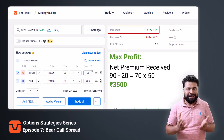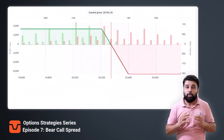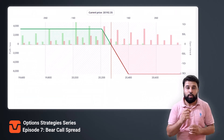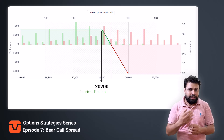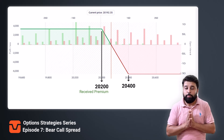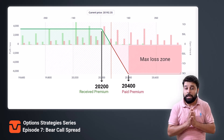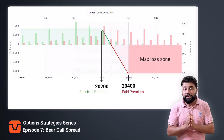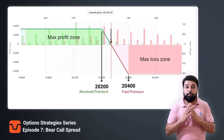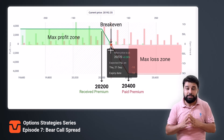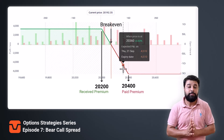Our strategy builder will keep this data ready for you. Looking at the payoff chart, you have sold a call option at the 20,200 strike and bought a call option at the higher 20,400 strike. You will incur maximum loss if Nifty expires above 20,400, and make maximum profit if Nifty expires below 20,200. The breakeven point is also visible — profits occur below it and losses occur above it.